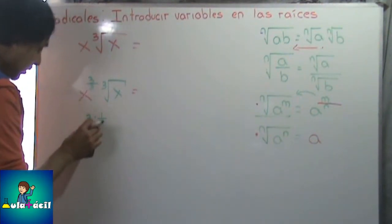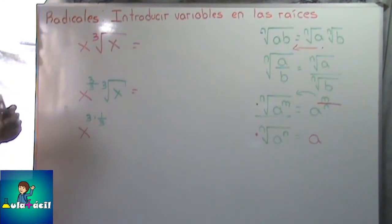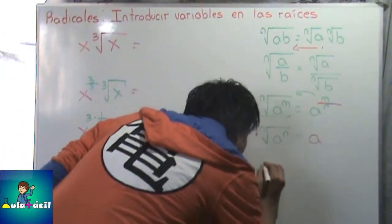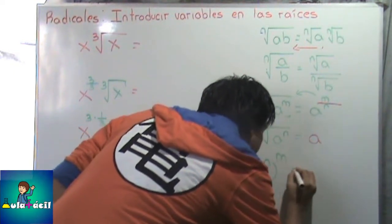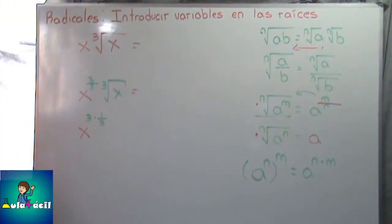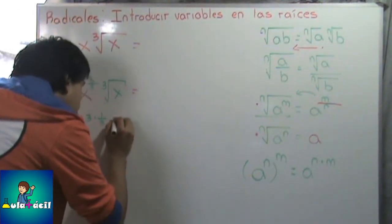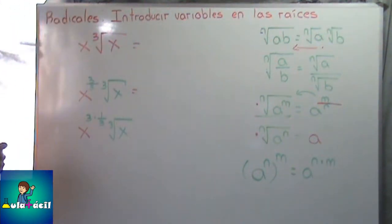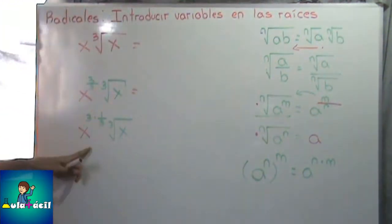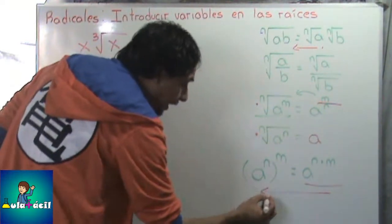Sabemos que 3 por 1 en los exponentes me da 3, y 1 por 3 me da 3. Lo único que hice fue factorizar este 3 del numerador, de tal forma que este 3 entero va a multiplicar a la fracción 1 tercio. Sigo manipulando el exponente sin modificar la expresión original. Existe esta ley: la base A elevado a N, luego elevado a M, es igual a A a la N por M. Esto que tenemos aquí se parece a esa ley.